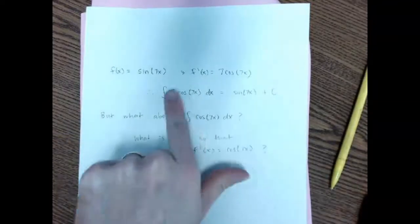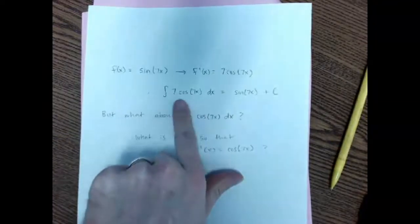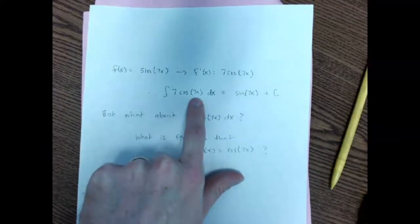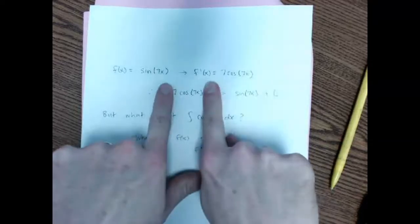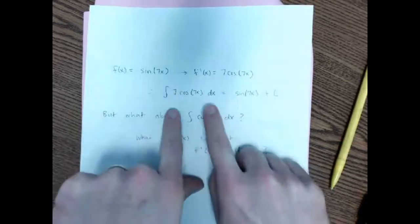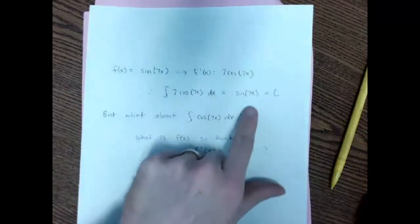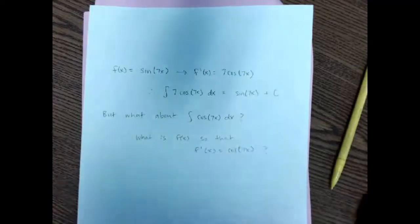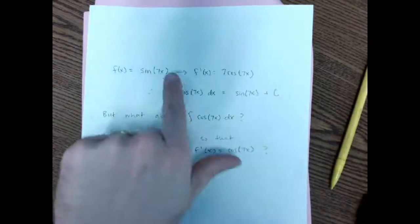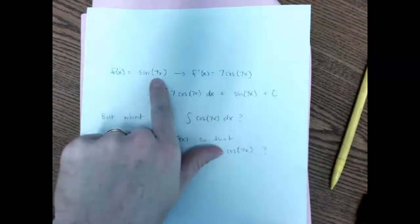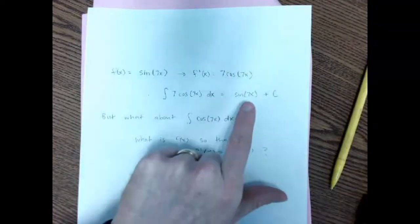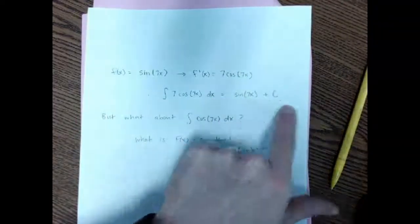Therefore, if I were to integrate — if I was trying to undo 7 cosine 7x, working my way backwards — I know that was the derivative, so I could integrate it and the original function must have been sine of 7x plus C. If the derivative of that is this, then the integration of this must be that, plus C. Don't forget the plus C.